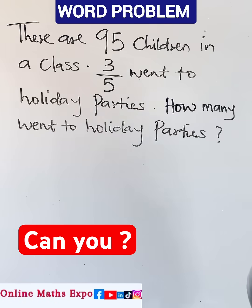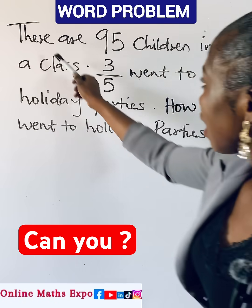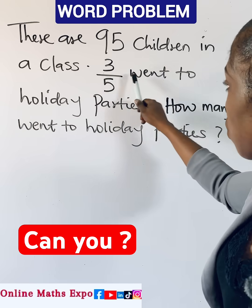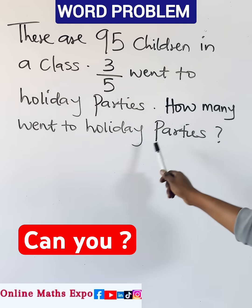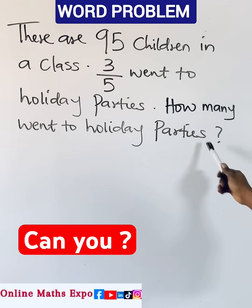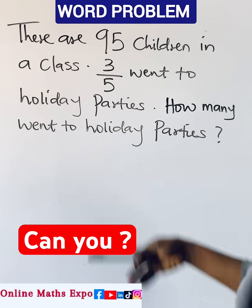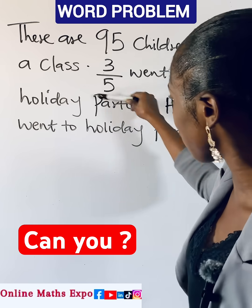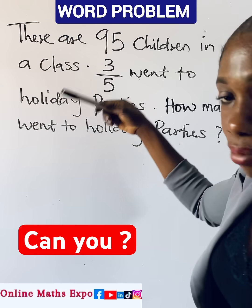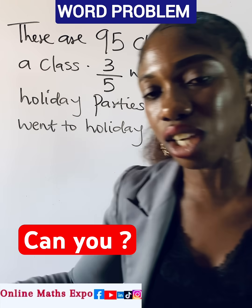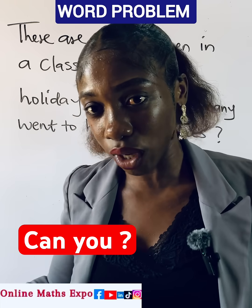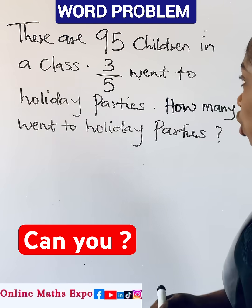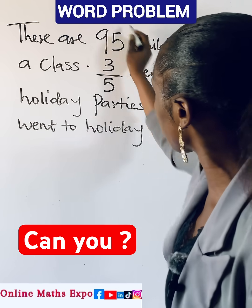Let's do this together — it's very easy. We are told there are 95 children in a class and three-fifths went to holiday parties. Then how many went to holiday parties? Know that this three-fifths is not the number of children — it's just a fraction of them that went to the party.